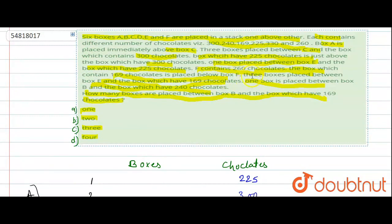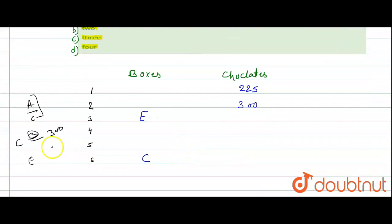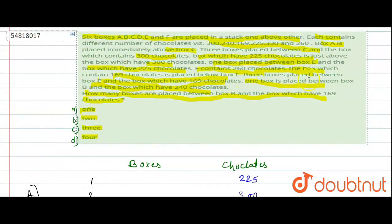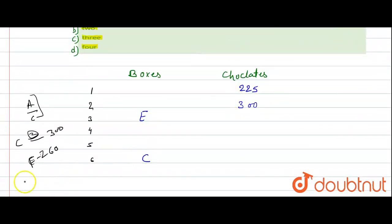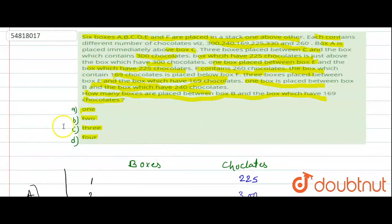F contains 260 chocolates. The box which contains 169 chocolates is placed below box F, but we don't know exactly how far below. One box is placed between box B and the box which has 240 chocolates.